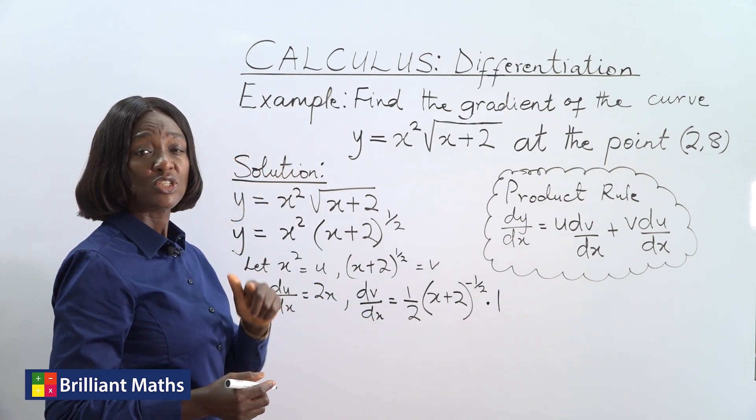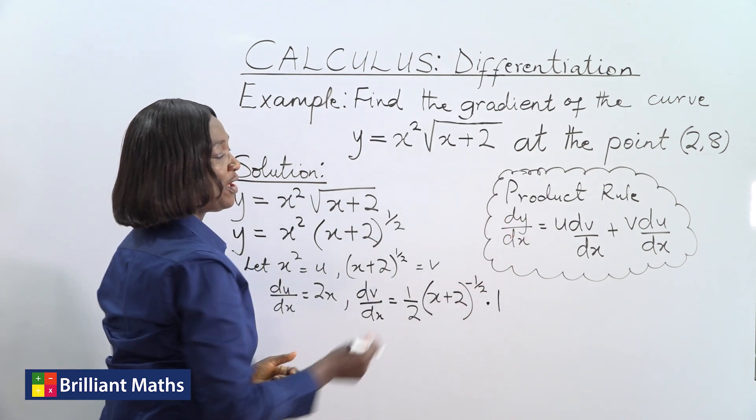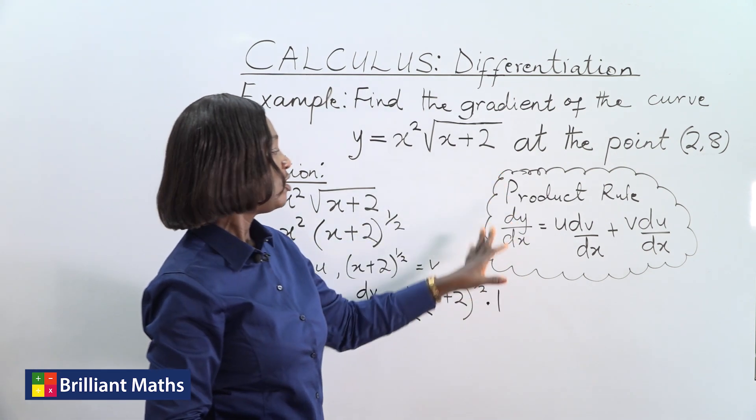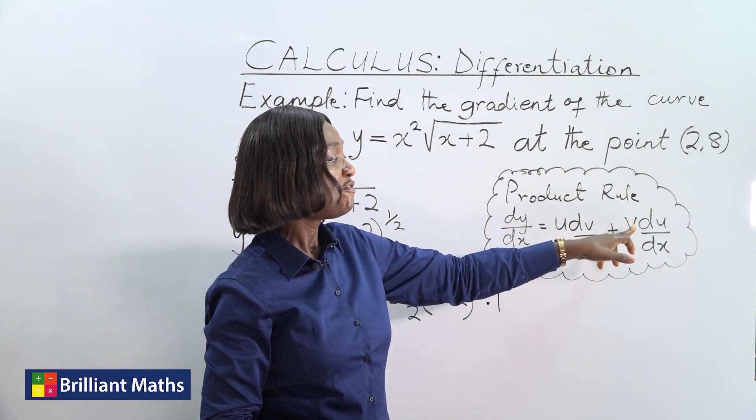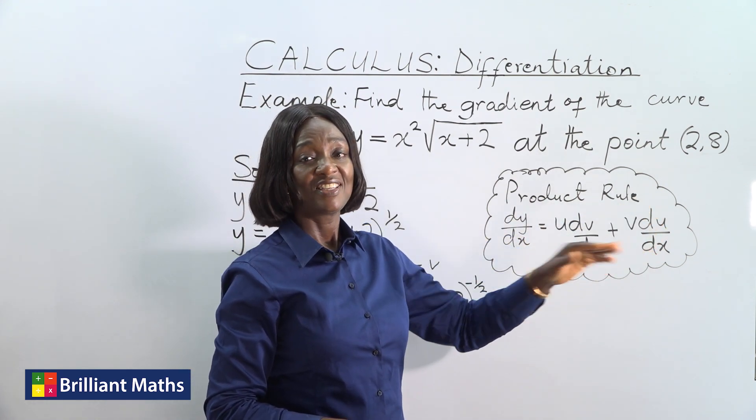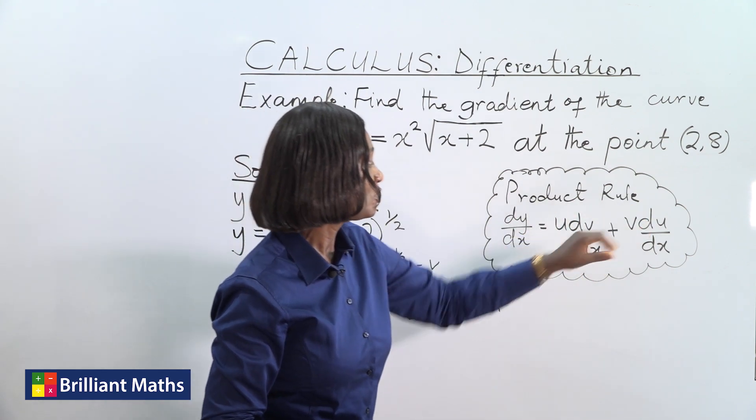So the next step is to input this into the formula. That's the product rule. dy/dx is equal to u dv/dx plus v du/dx. Simple. So we have all of those parameters.